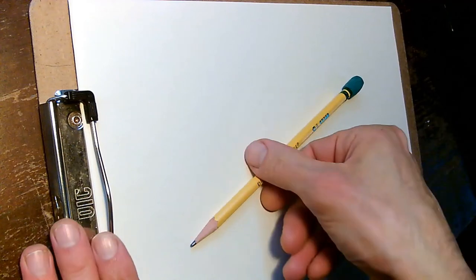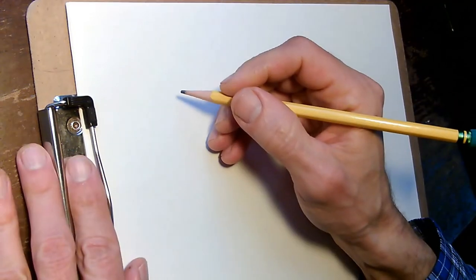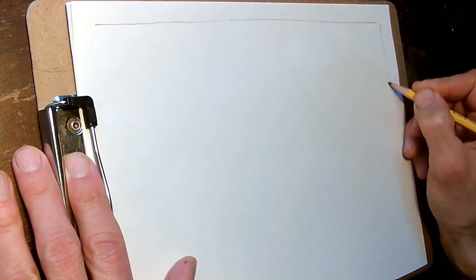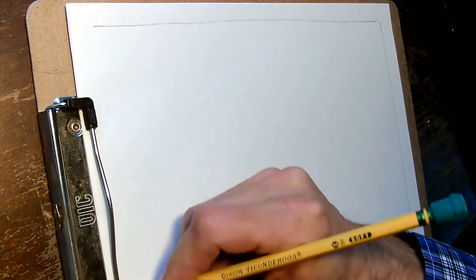The first thing we're gonna do is we're gonna draw a frame around the outside edge of the page. This protects our drawings by keeping them away from the outer edge of the page and we know exactly the space we have to draw into now.